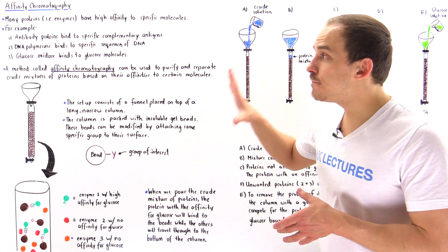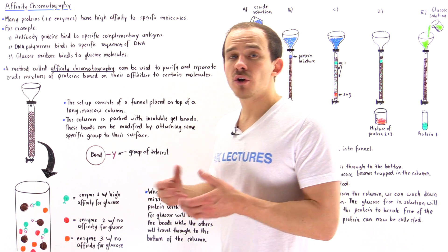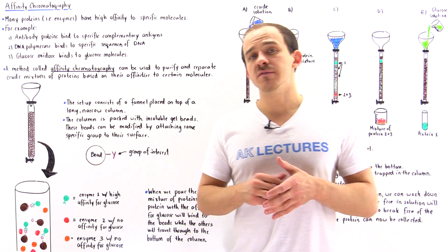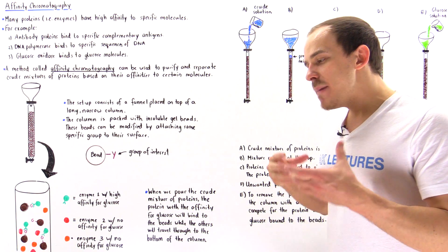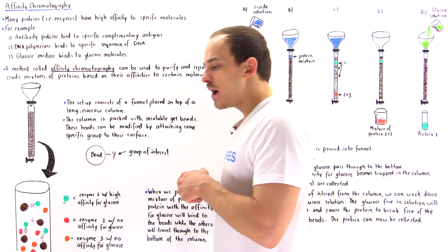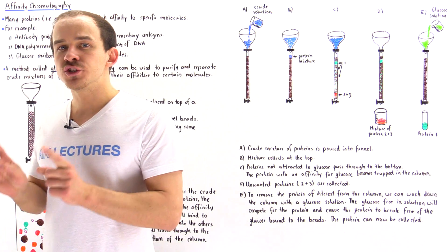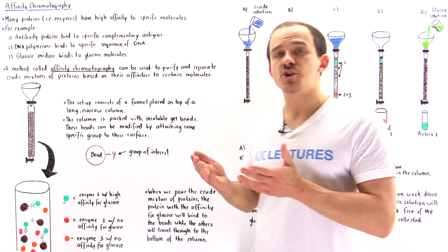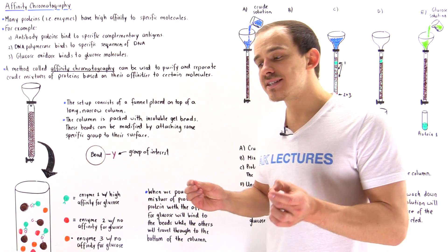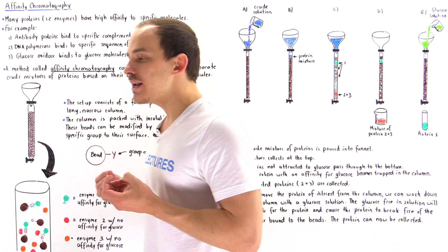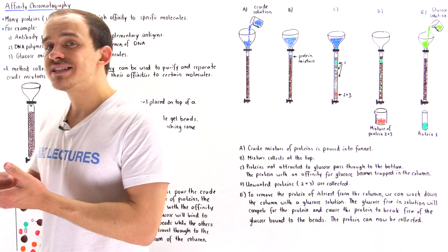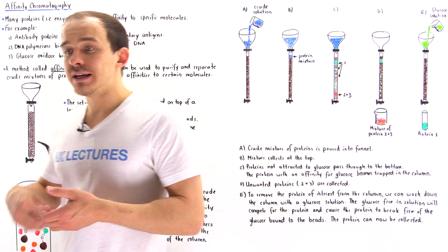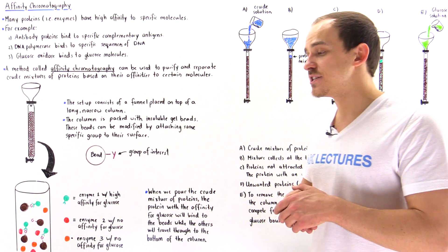Now we're going to discuss a fifth method by which we can purify our protein mixture. In this method, we also use a specific property of proteins. So many proteins inside our body have a specific high affinity to some type of molecule. The general example of these proteins are enzymes — proteins found inside our body that bind to specific substrate molecules and accelerate the reaction, basically increasing the rate at which that reaction actually takes place.